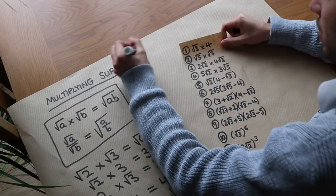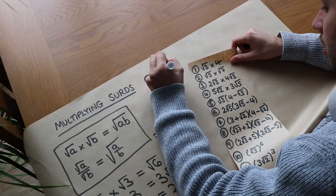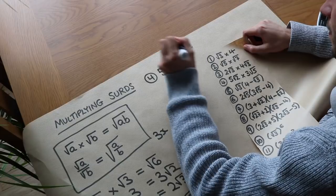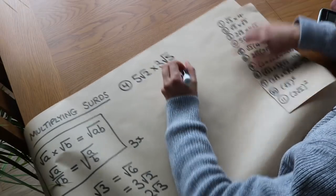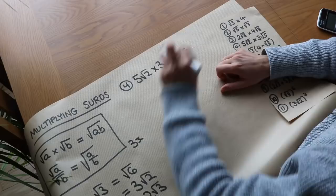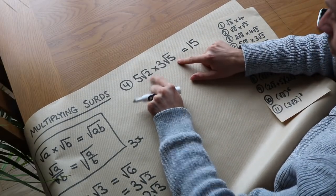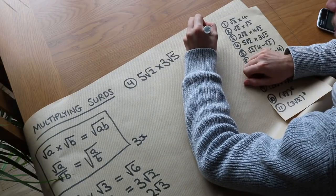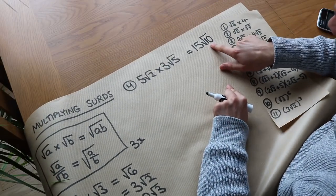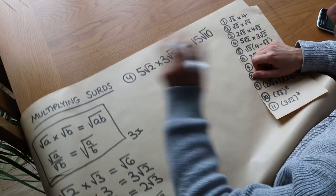What about the next one? Question 4: we've got 5 root 2 times 3 root 5. Well we can multiply the non-surds together first — 5 times 3 is 15 — and then we can times the surds together. Root 2 times root 5 is root 10, and that root 10 doesn't simplify because there's no square numbers that go into 10 other than 1.